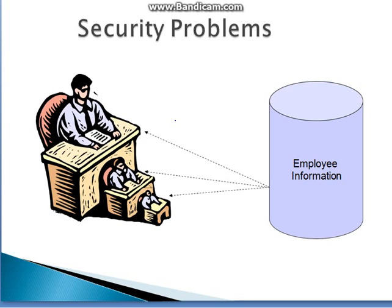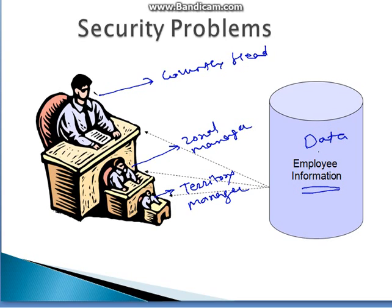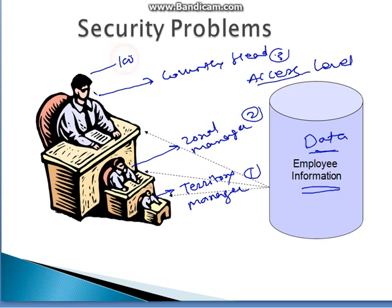Next are security problems. For example, here is a person at the territory level — a territory manager — here is the zonal manager, and here is the country head. They all have access to the same employee data, but the access level is different. The territory manager can see 100% of the data, the zonal manager only 50%, and the country head only 10%.